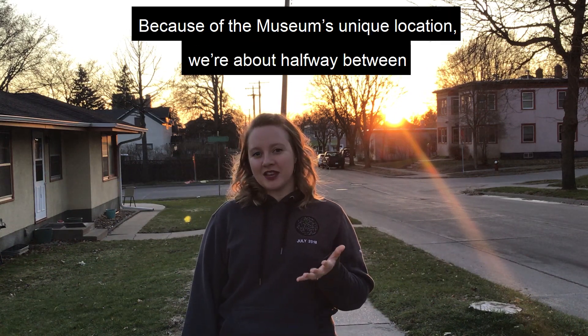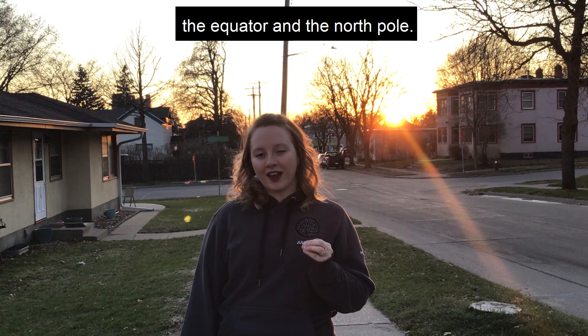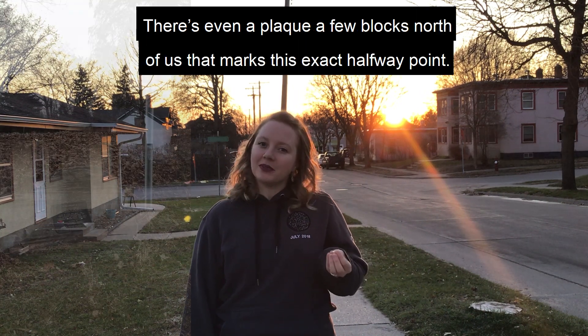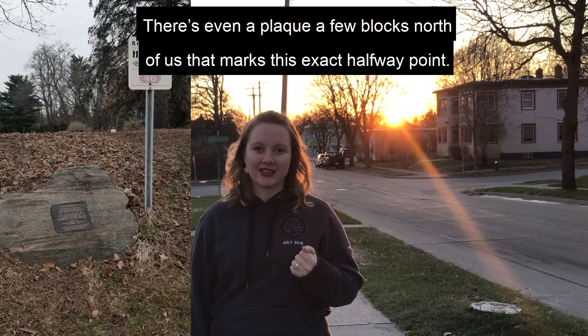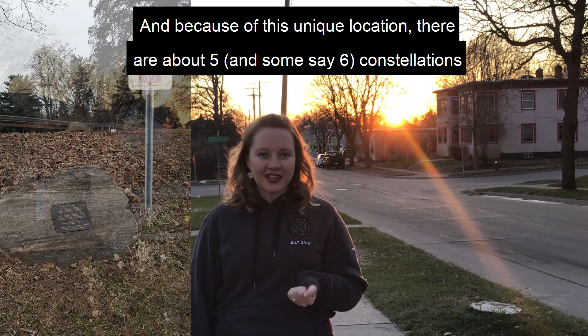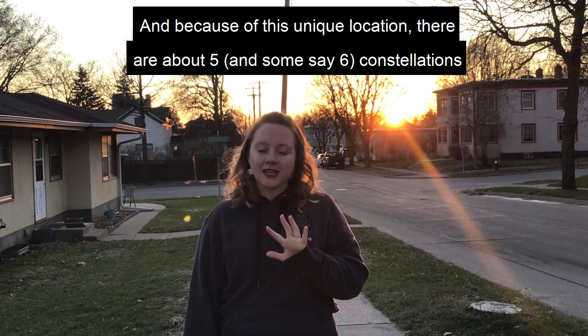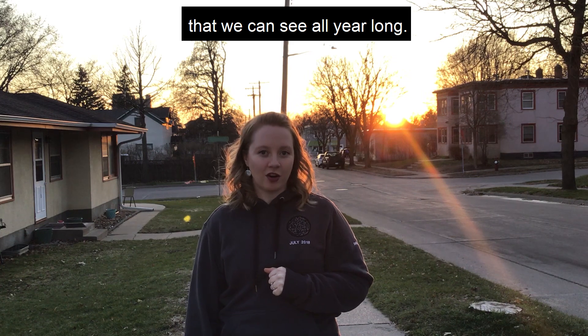Because of the museum's unique location, we're about halfway between the equator and the North Pole. There's even a plaque a few blocks north of us that marks this exact halfway point. And because of this unique location, there are about five, and some say six, constellations we can see all year long.